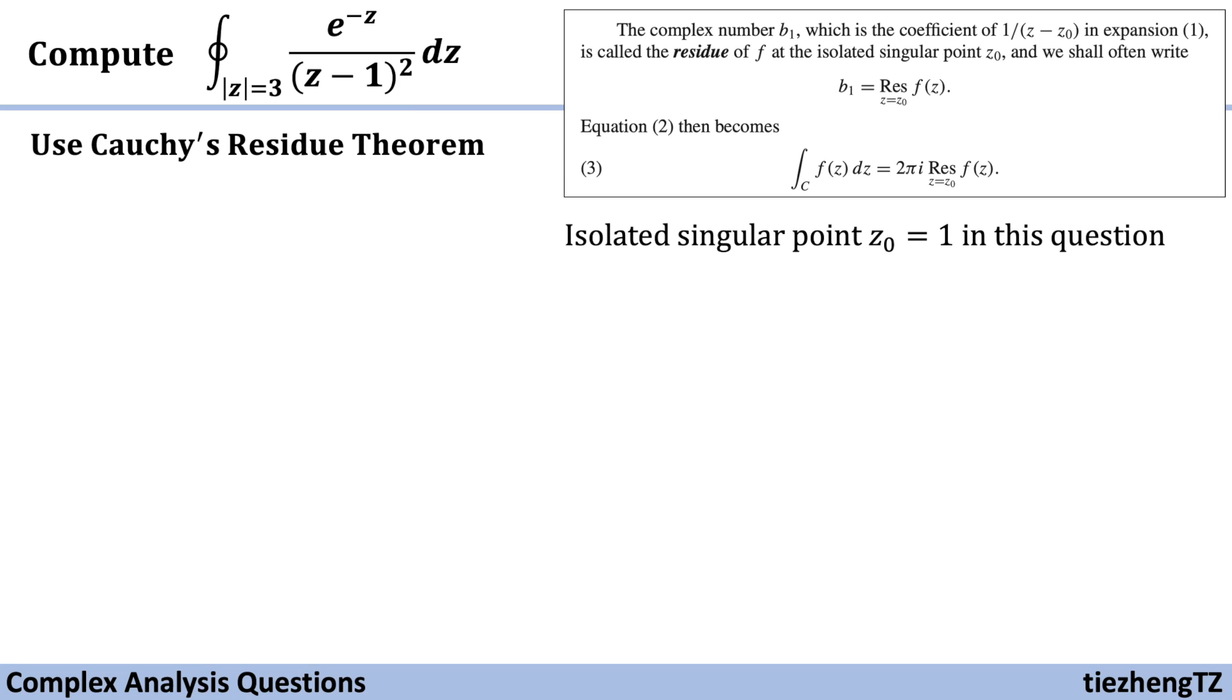In our question, we know the isolated singular point is z₀ = 1, and we know this point is within the range |z| = 3.